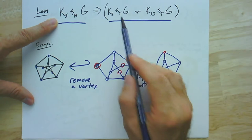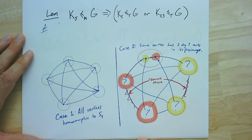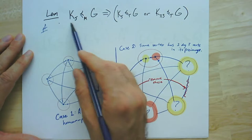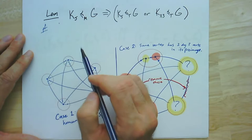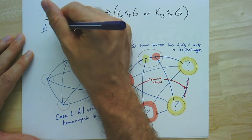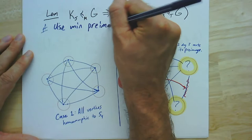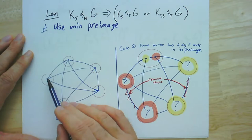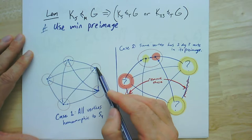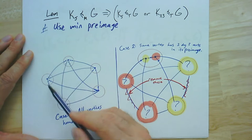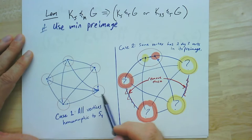That example motivates how to think about this lemma: we had a K5 minor and we want to find at least one of the two topological minors in the graph. We use the idea of looking at the minimal preimage of the contraction. If it's a K5 minor, there's some subgraph of G that contracts to K5. In the minimal preimage, the preimage of every vertex will be a tree, and between any pair there's exactly one edge.